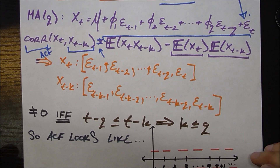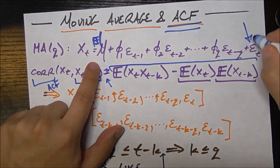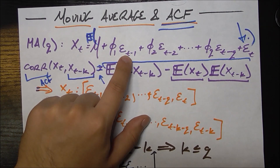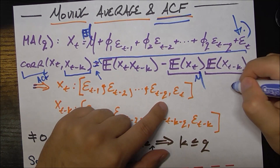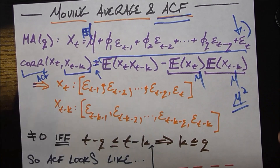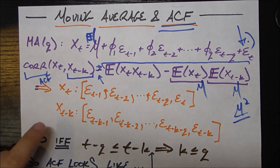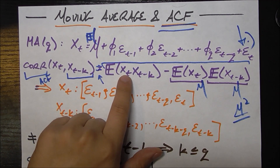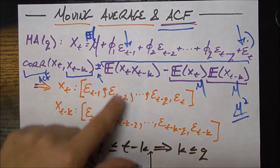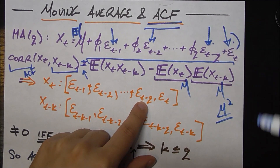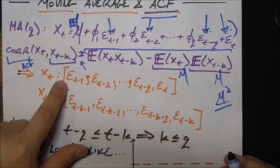The expected value of x_t is mu, since the expected value of each error term is zero — each error is centered around zero. So both expected values are mu, giving us mu squared. The more interesting piece is in the expected value of x_t times x_{t-k}. In x_t, we have an error_{t-1} term, an error_{t-2} term, an error_{t-q} term, and a simple error at time t. In x_{t-k}, we just substitute t with t-k to get all the corresponding error lag terms.